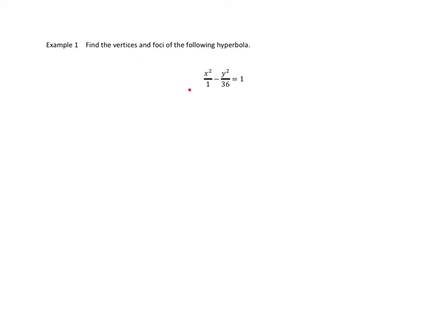Let's find the vertices and foci for the following hyperbola: x squared over 1 minus y squared over 36 equals 1. Because the negative is attached to the y squared term, I know this hyperbola has no y-intercepts but does have x-intercepts. So it's going to look like two pieces opening left and right. The foci are on the transverse axis, which is the x-axis.